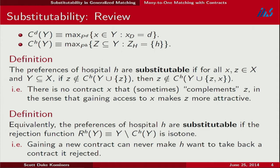This substitutability concept is going to turn out to be extraordinarily robust — it's the right monotonicity condition throughout all of generalized matching. It's the same idea that gets us past responsive preferences in many-to-one matching. Another way to think about this is as a monotonicity condition: the preferences of hospital H are substitutable if the rejection function is isotone. Essentially, gaining a new contract can never make you want to take back one you would have rejected before.